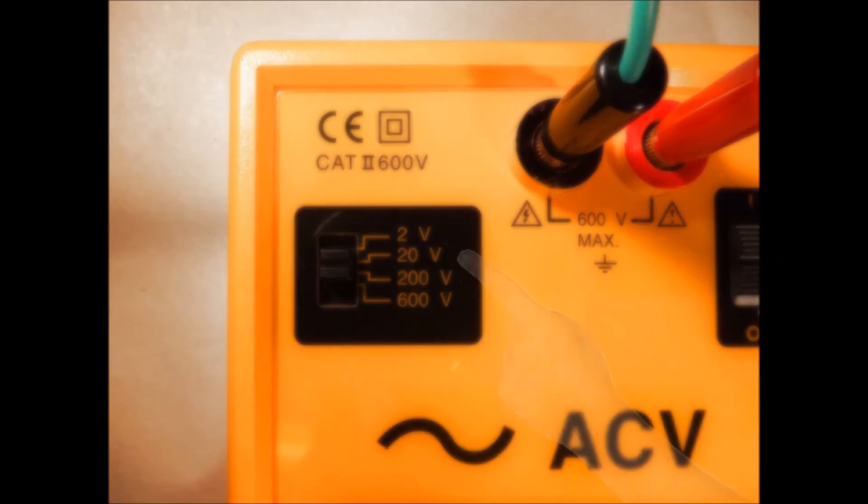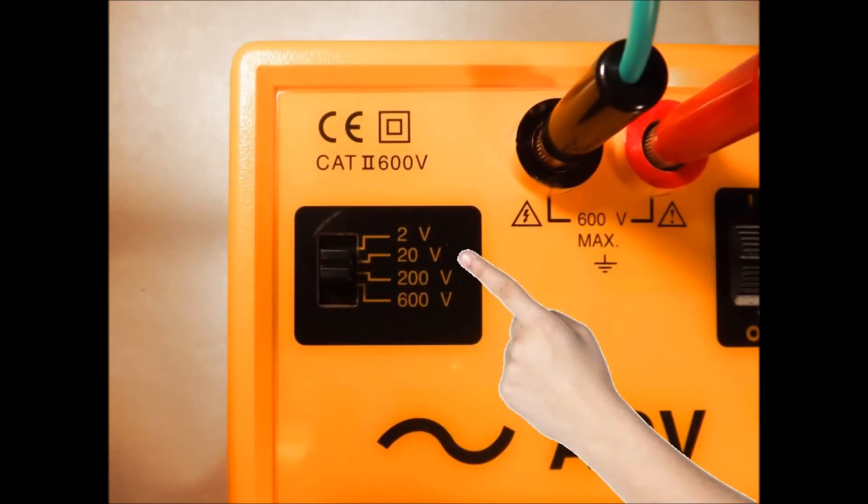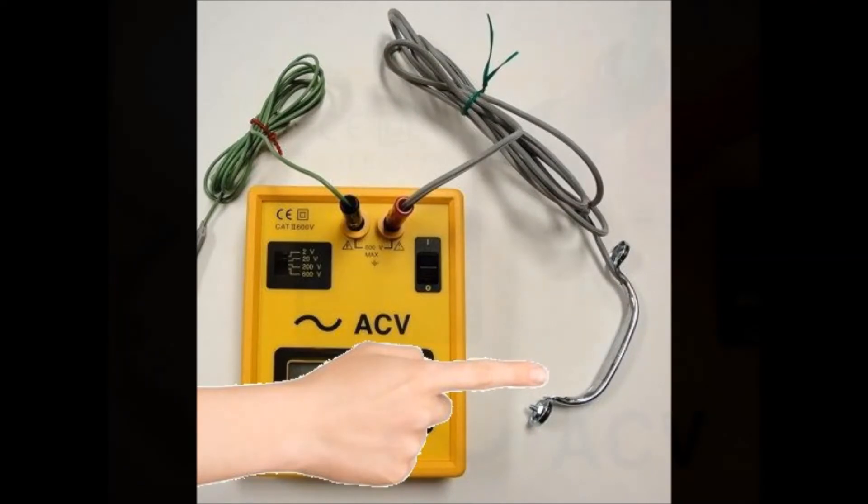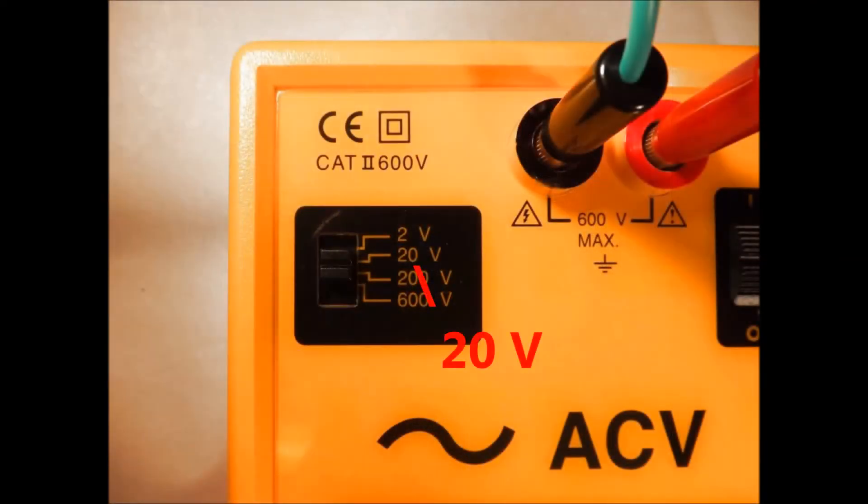Turn on the meter and set it to the most sensitive 2 volt range. Now hold the meter handle. If the reading exceeds 2 volts, you can change the setting to 20 volts.